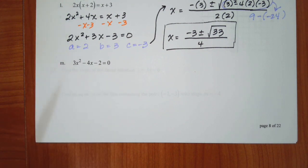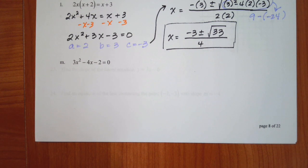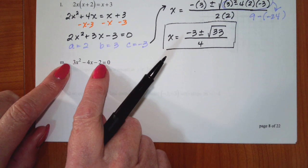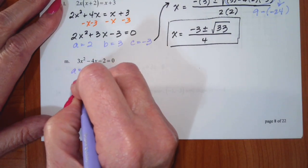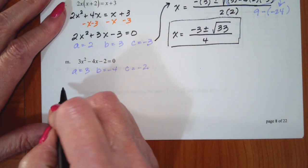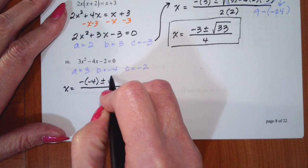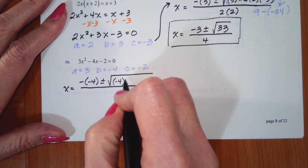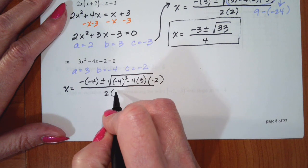For the equation 3x squared minus 4x minus 2: if I multiply a times c, there is no product of negative 6 that adds to negative 4. So a is 3, b is negative 4, and c is negative 2. So x equals the opposite of b, plus or minus the square root of b squared minus 4 times a times c, all divided by 2 times a.